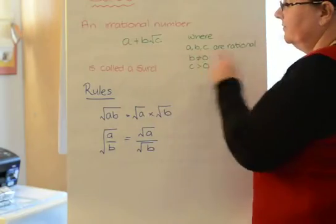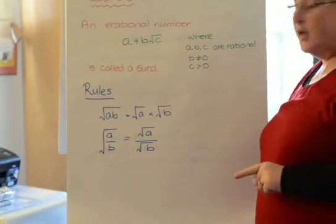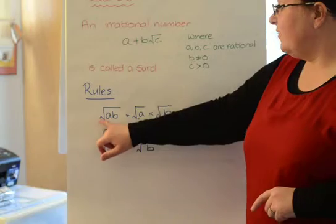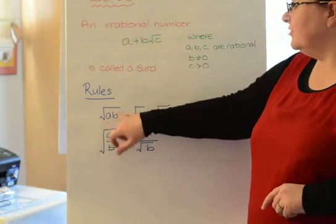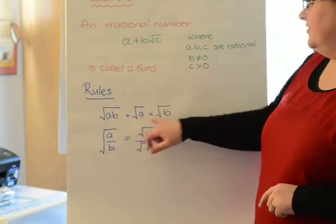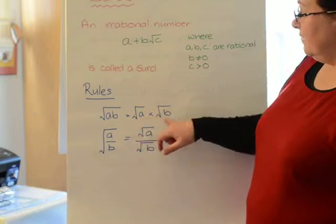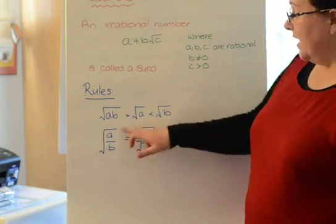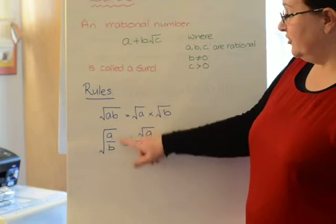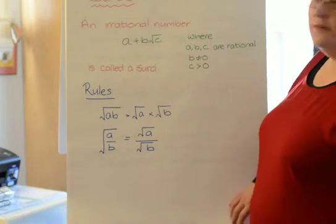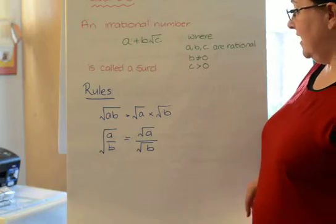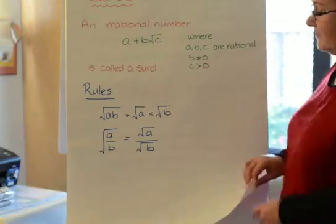Anyway, that is called a surd. And there are some rules that apply to surds. So, if I have a root of a product, that equals the roots separated and multiplied together. If I have the root of a quotient, then again, we can separate them out and divide them individually.